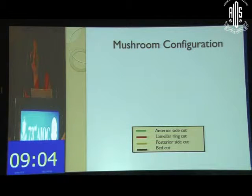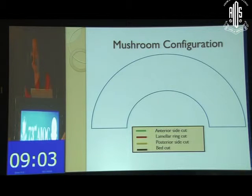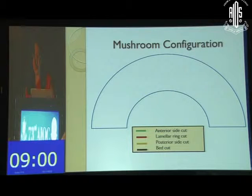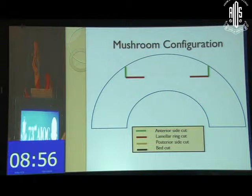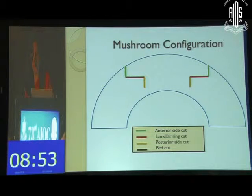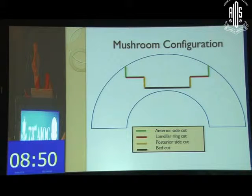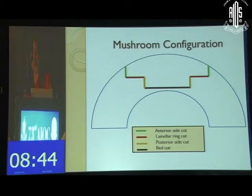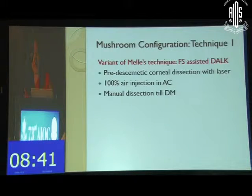In the mushroom configuration, you have an anterior side cut, then a lamellar ring cut, which is followed by a posterior side cut, and finally the bed. It is important to know at what levels each of these are because you have to reach the plane required for a deep anterior lamellar keratoplasty.